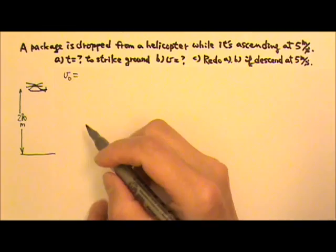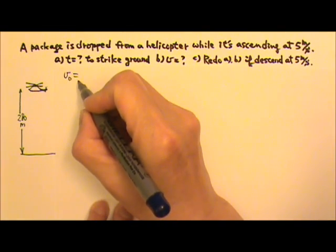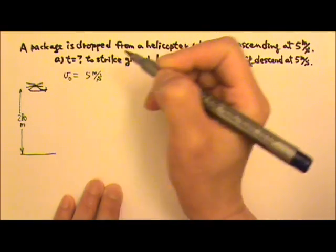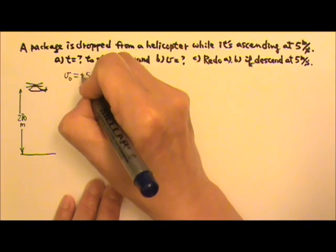The package is dropped from an ascending helicopter, which means the moment the package is released, it has a velocity that is the same as the helicopter's velocity. Like this ball — if I release it when my hand is moving upward, its initial velocity as a falling object will be the same as the velocity of my hand at the moment of the release. So the initial velocity of the falling package is an upward 5 meters per second — positive 5.